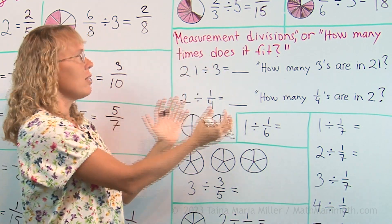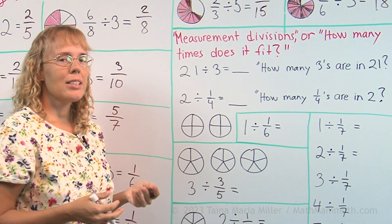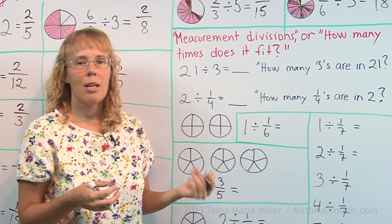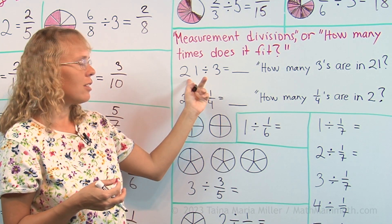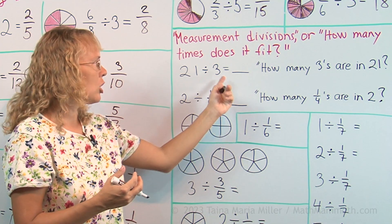Okay, and now measurement division, so to speak. What it means is that we think how many times does the divisor fit into the dividend, or how many times does it go into the dividend.